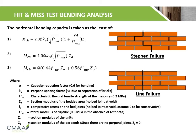The factors affecting horizontal bending capacity include: phi, the capacity reduction factor, taken as 0.6 for bending; Kp, the perpen spacing factor, taken as less than 1 for hit-and-miss walls; fmt, the characteristic flexural tensile strength of the masonry, taken as 0.2 MPa; Zd, the section modulus of the bedded area, which is calculated; fd, the compressive stress on the bed joints, assumed to be 0 to be conservative; ft, the lateral modulus of rupture, taken as 0.8 MPa due to the absence of test data; Zu, the section modulus of the units, which is calculated; and Zp, the section modulus of the perpens, which is taken as 0 since there are no perpen joints in hit-and-miss walls.